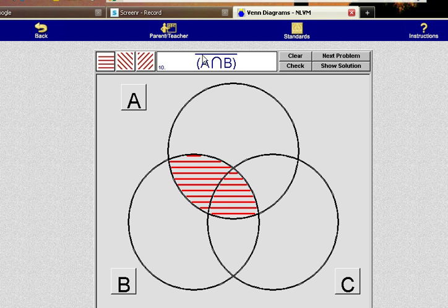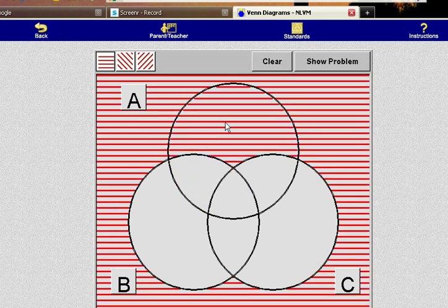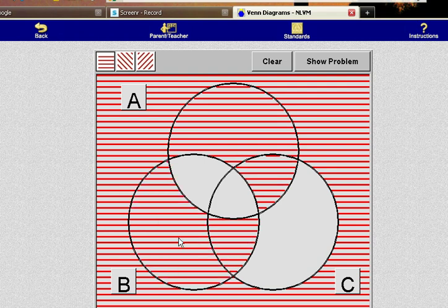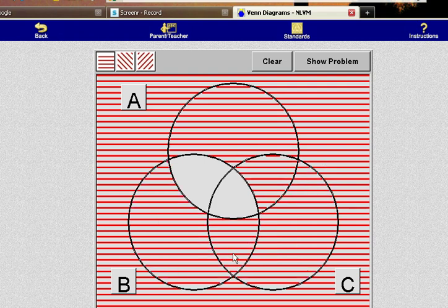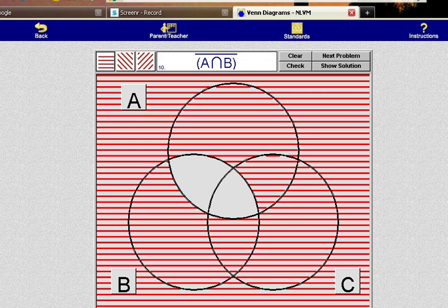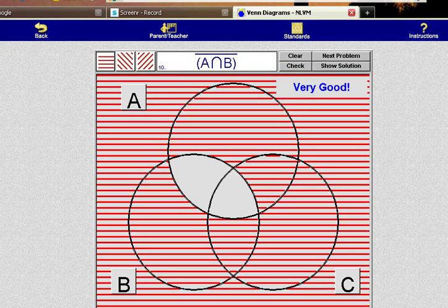And now we want the complement of that. In other words, everything outside of this shape. So on this applet you cannot erase, so I'm going to start over. And I'm going to shade everything outside of A intersect B. This is the complement of the quantity A intersect B. Let's check it. And that's correct.